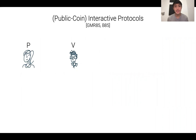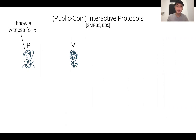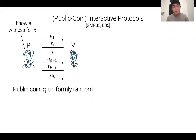I'll be talking today about public coin interactive protocols. We have a prover on the left and a verifier on the right, and the prover wants to convince the verifier that some statement is true — for instance, that X is in 3SAT or that it knows a witness for X. The prover and verifier have a back-and-forth interaction: the prover sends messages, and the verifier responds by sampling uniformly random coins. At the end, the verifier determines whether or not to accept based on the transcript alone — there's no private randomness.